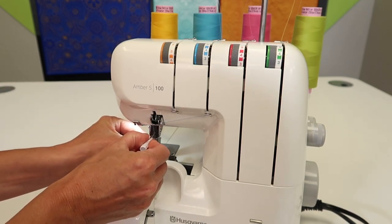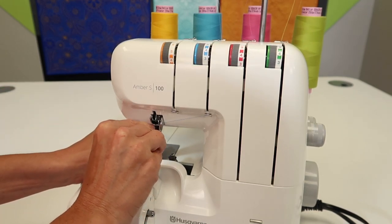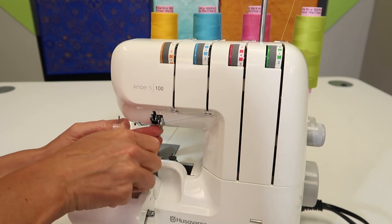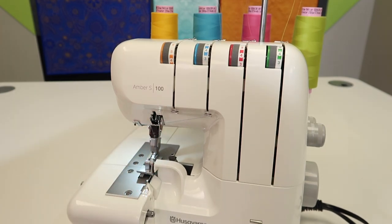I do have two needles in here, so I'm going to start by just removing the left needle. It's almost set up first as a three-thread rolled hem. Take the spool off the machine that you are no longer using.